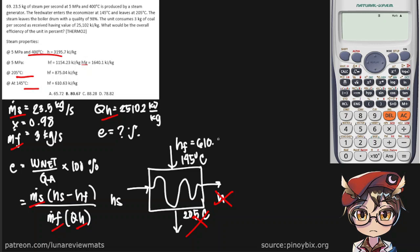And of course, our H sub S for the steam is 3195.7 kilojoules per kilogram.